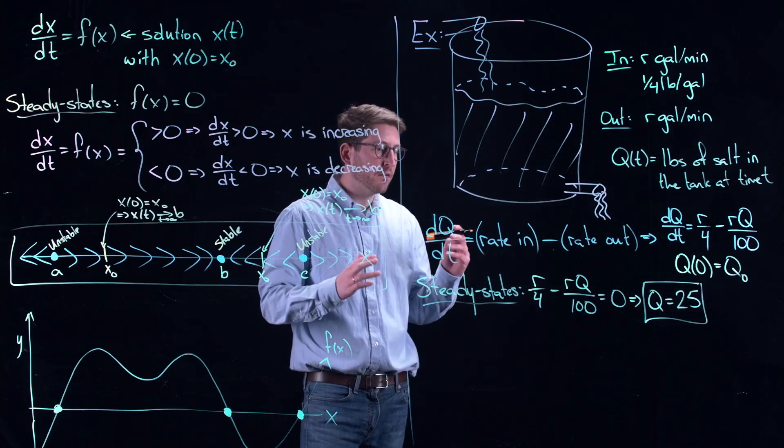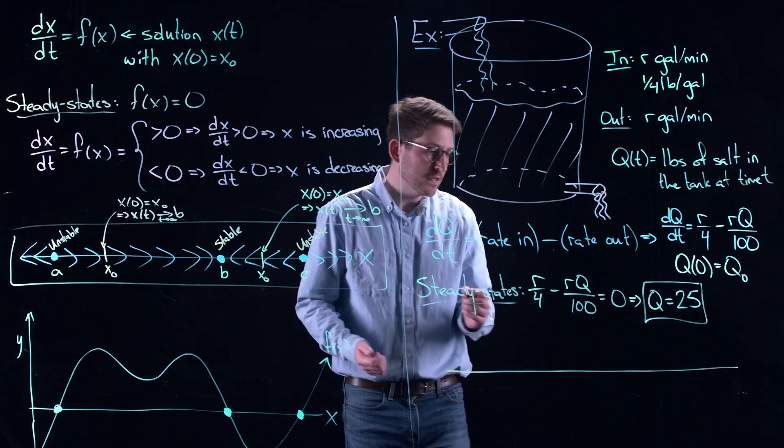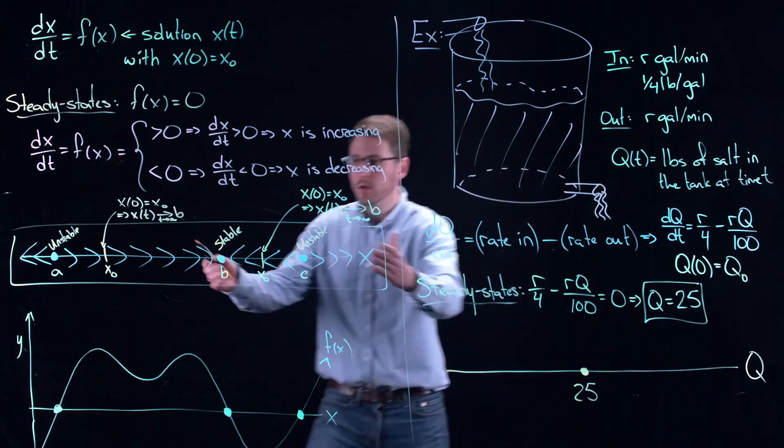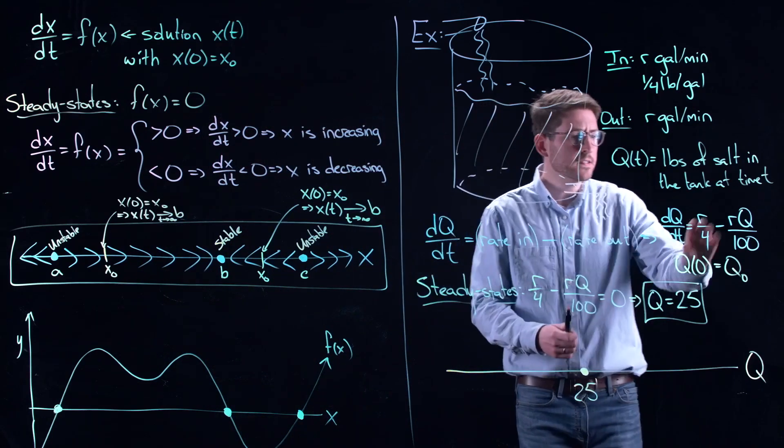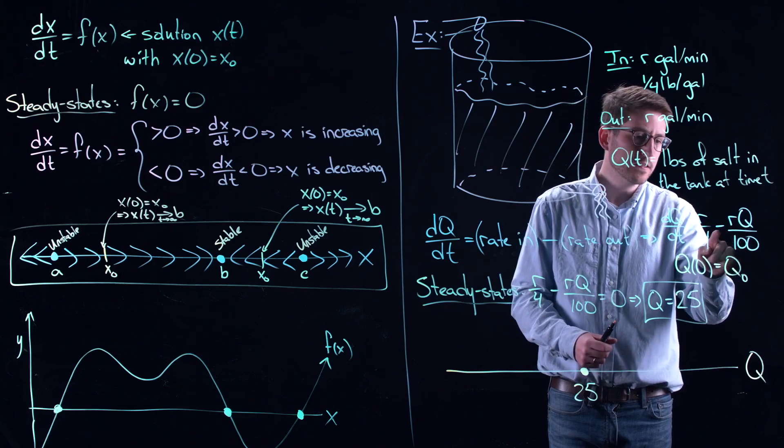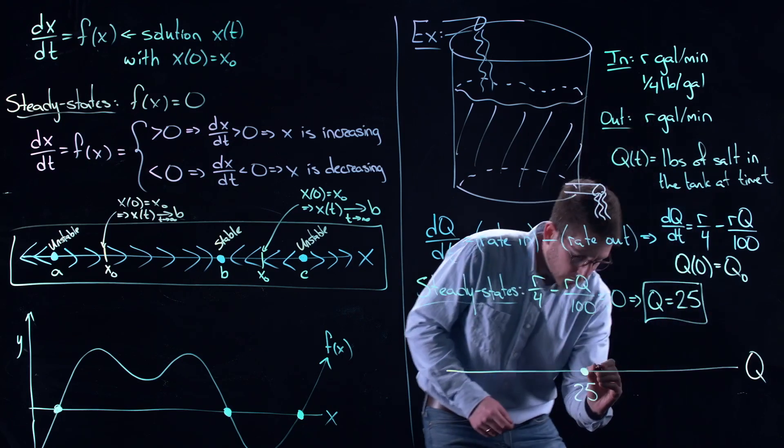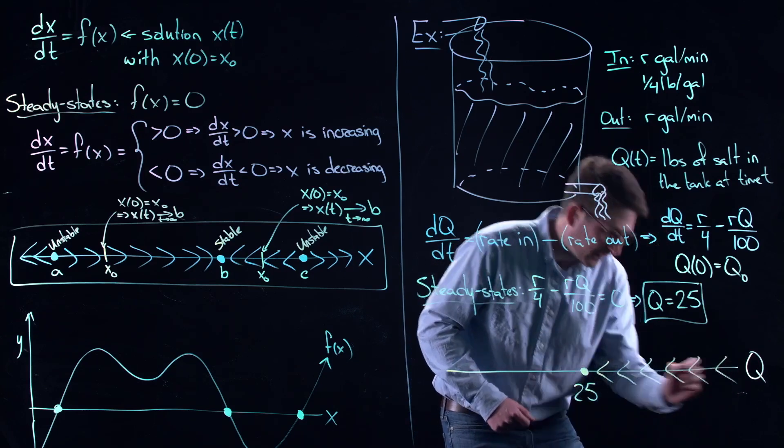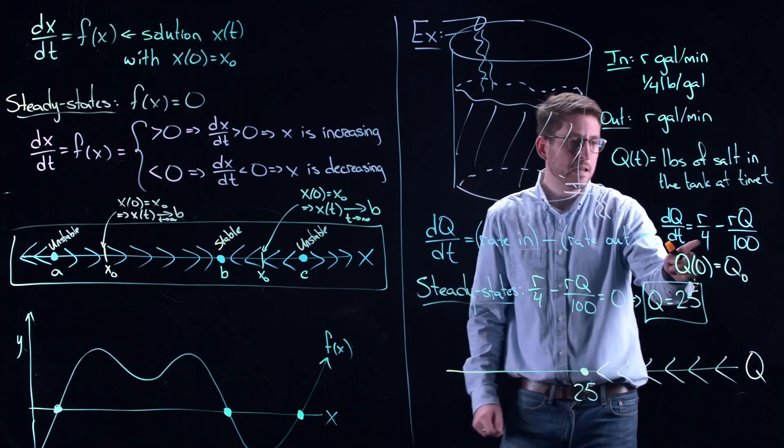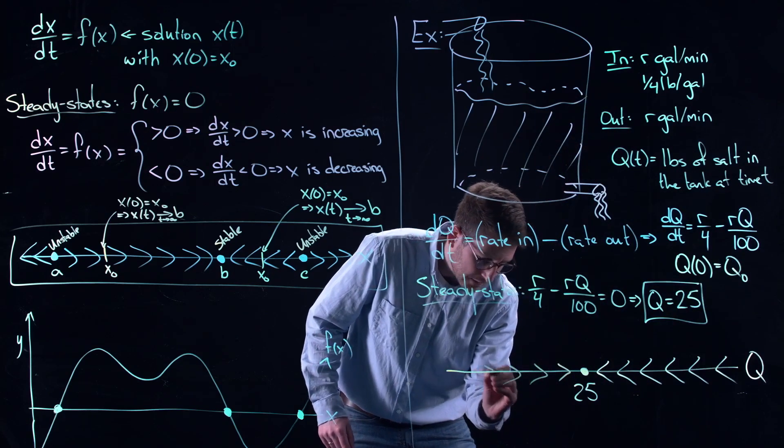So the question is what happens if you have different values initially? We can draw ourselves a little phase line diagram. Let's take q. Let's put 25 on here. Label our equilibrium. The same thing that we did right here. Now this is our function on the right hand side of our dynamical system. What we can see is that if q is larger than 25, this negative term dominates and the whole derivative here is negative. That means that q is moving to the left. So I've got all of these left arrows going like this. Same thing, if q is smaller than 25, the negative isn't enough to pull this down. And so the rate in is really dominating. It's putting in more salt than it's taking out. And that means that the amount of salt that's being added into this thing is increasing.